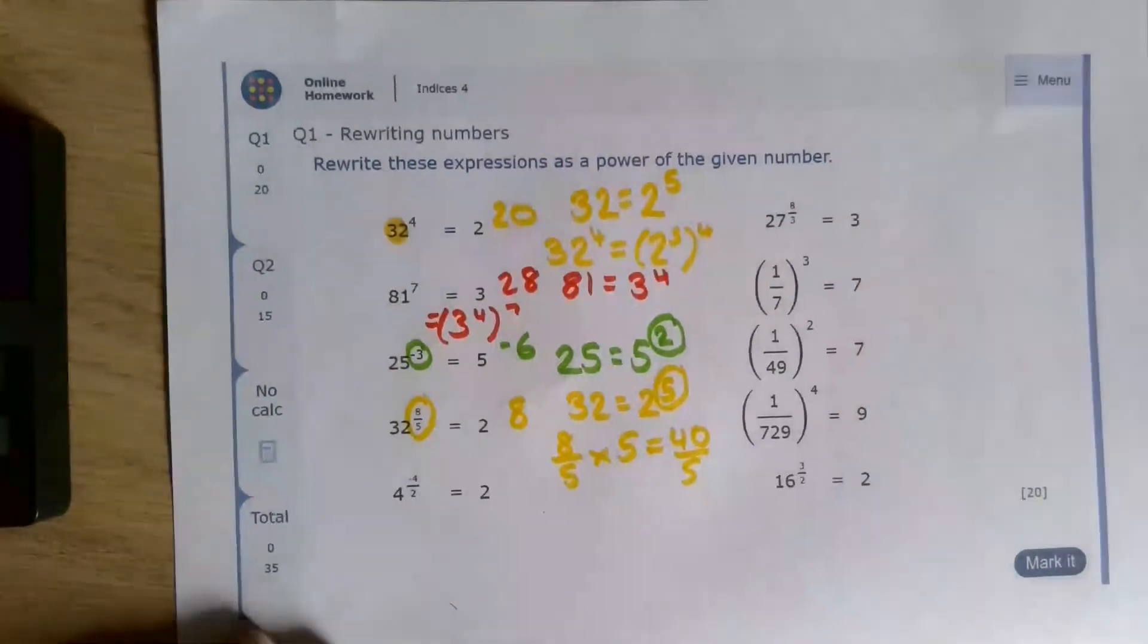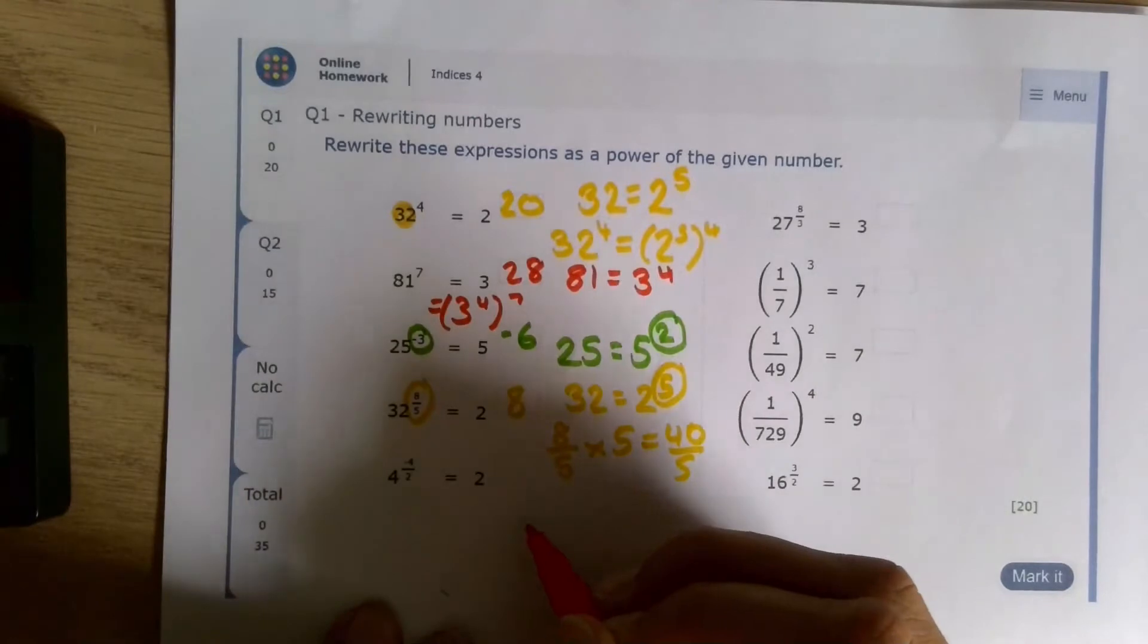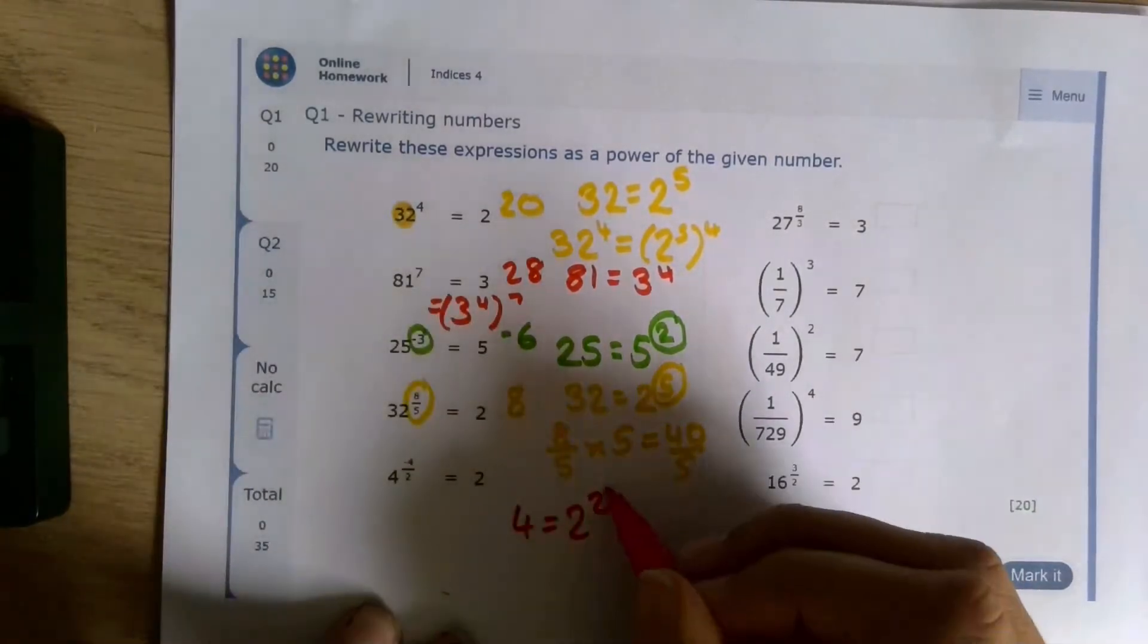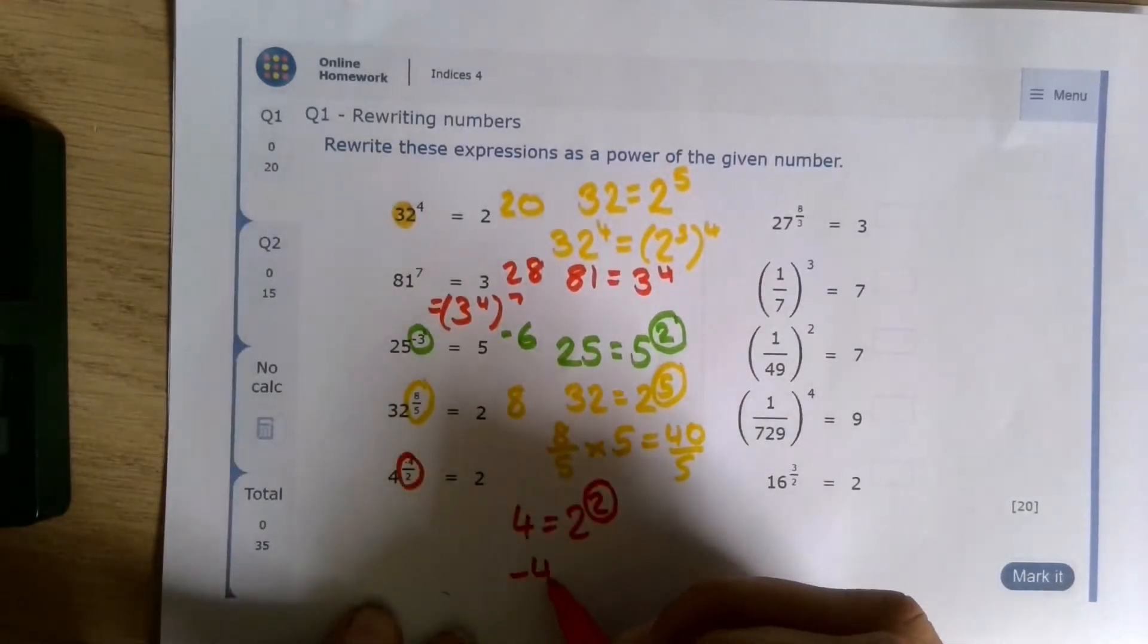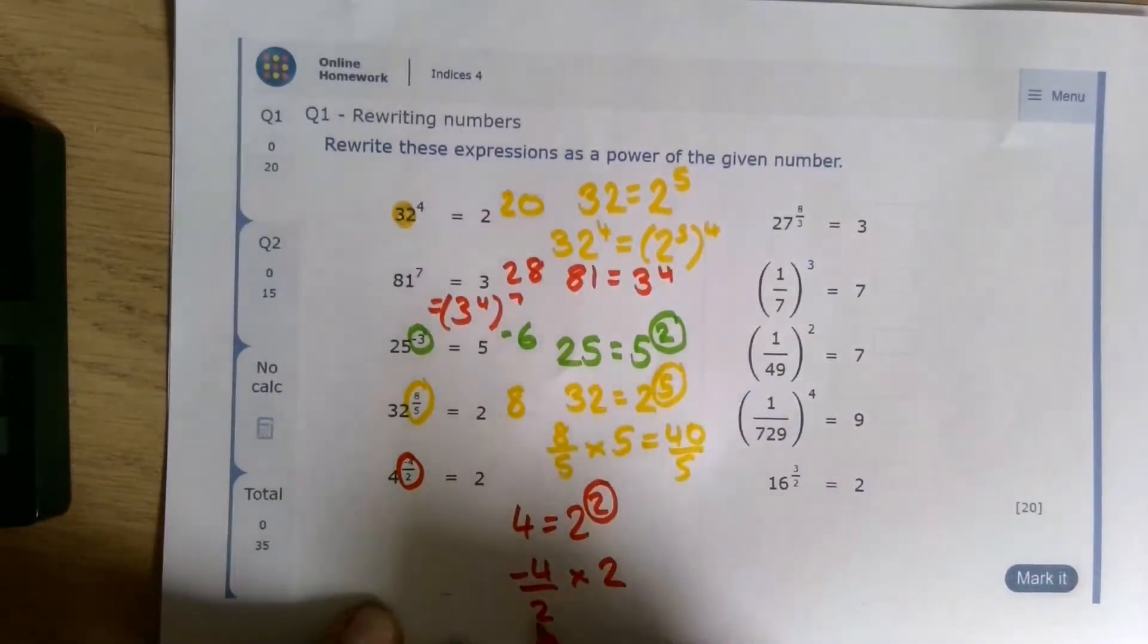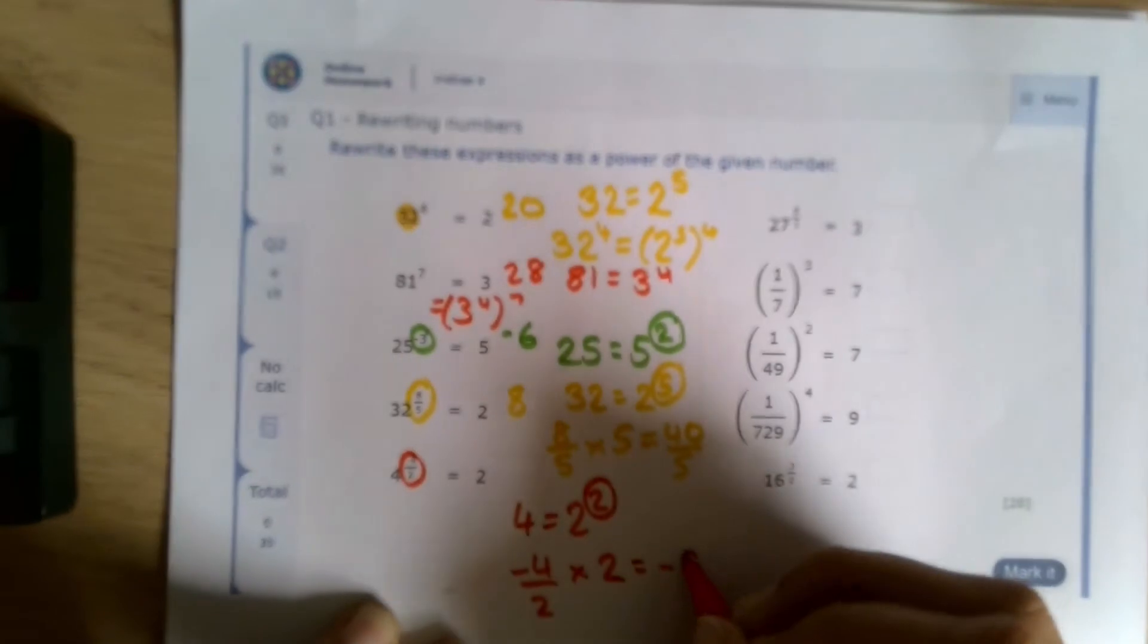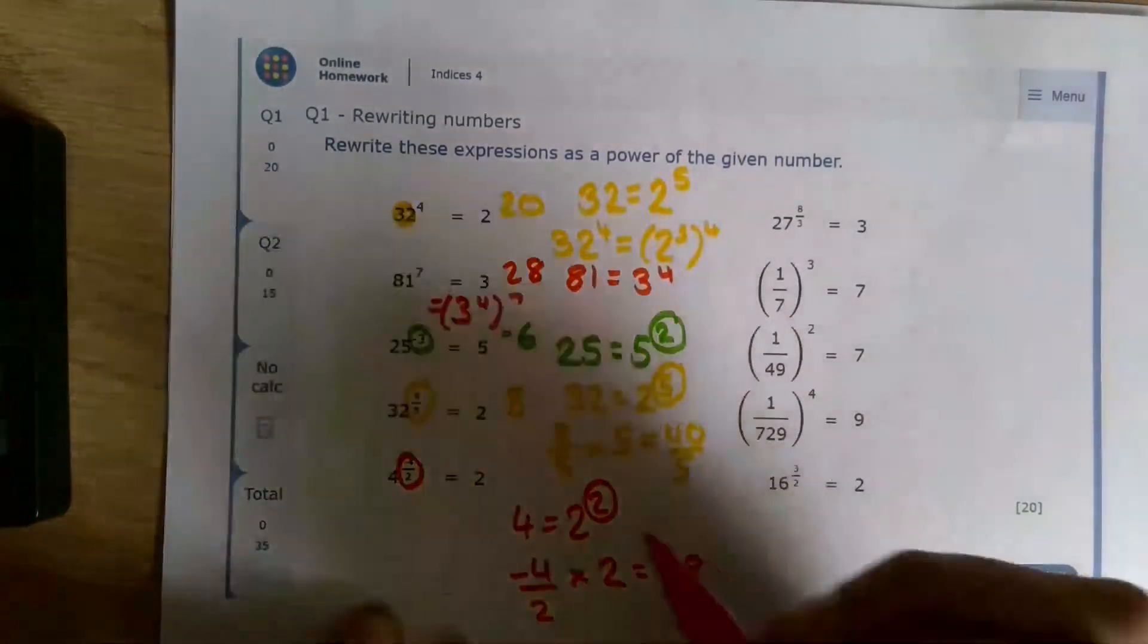And then finally, we've got this 4 to the power of something. First of all, think about 2. So 4 is 2 squared. So we're multiplying these two things here. And again, those 2s will just cancel each other out. If you really want to do it properly, you'll write negative 8 over 2, which of course simplifies to negative 4.